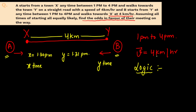In one hour, how much will they travel? In one hour they are going to travel 4km, because they are travelling at 4km per hour. So if A leaves at 1:30 and B leaves at 1:31, for sure they are going to meet in between.